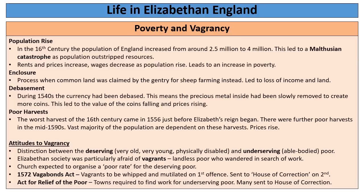The only real help available was poor relief, which the church was expected to organise locally — the rich were expected to charitably donate to help the deserving poor, though it wasn't compulsory. The 1572 Vagabond Act punished the poor: anyone caught being a vagrant was whipped through the streets and had a hole drilled through their ear. If they reoffended they were sent to a house of correction — an early form of prison. The Act for the Relief of the Poor showed a slight change of attitude, with towns required to find work for the able-bodied poor. But more often than not they were sent to these houses of correction. This was a time of increasing poverty and a lack of real solutions.